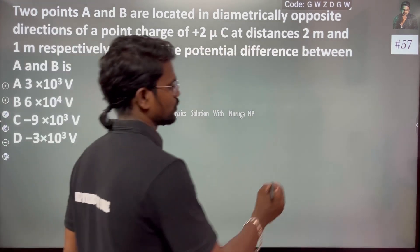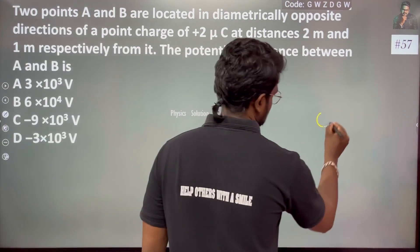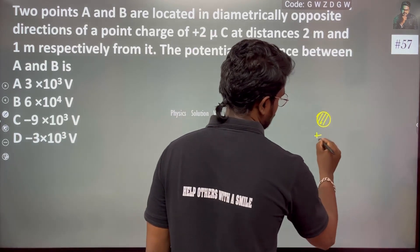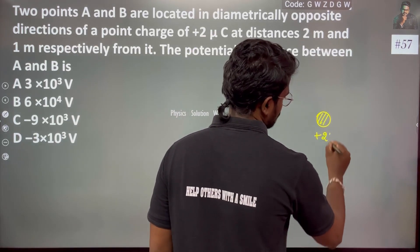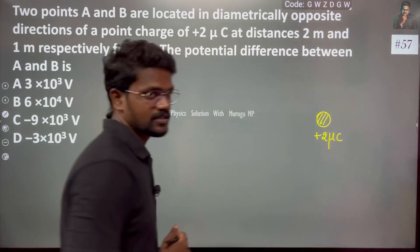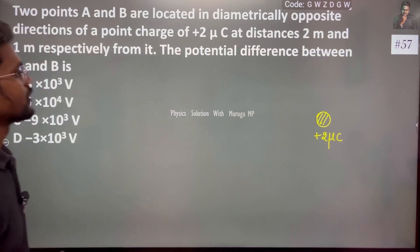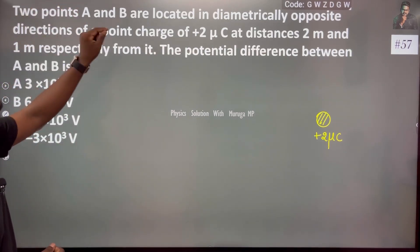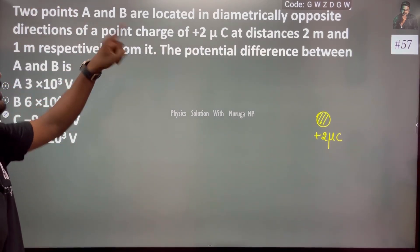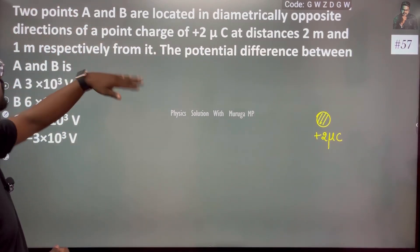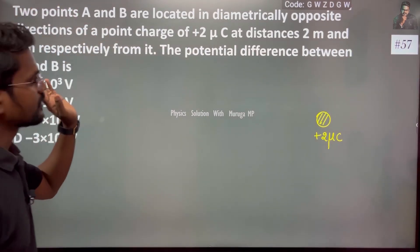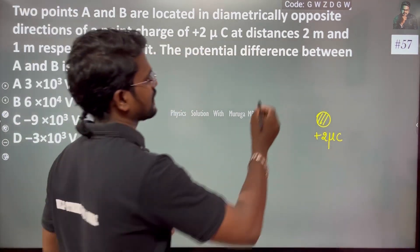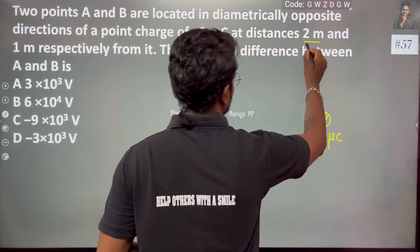If there is one charge — the charge is plus 2 microcoulombs — two points A and B are located in diametrically opposite directions of the point charge. One point is at 2 meters.